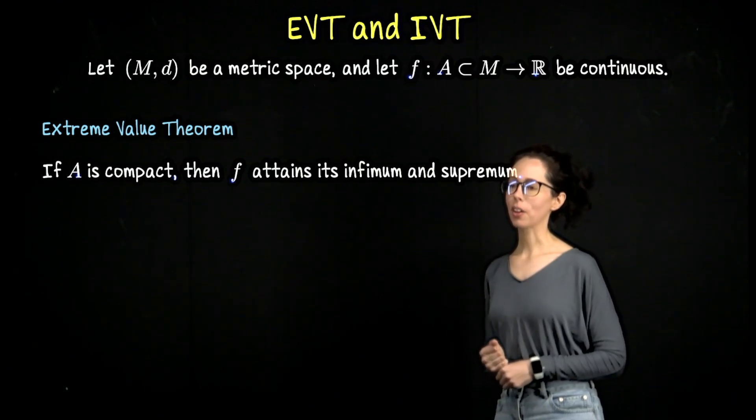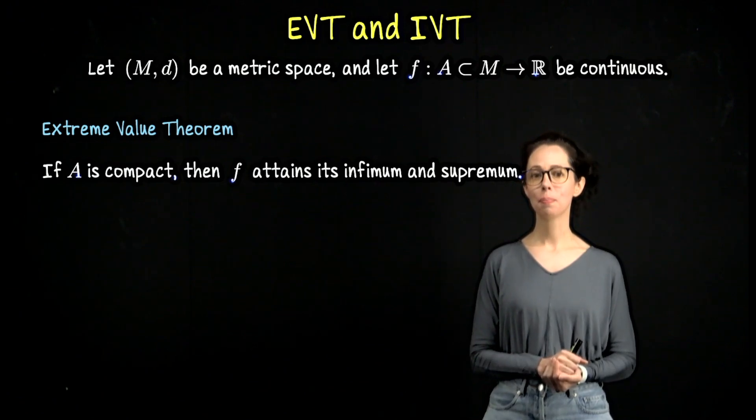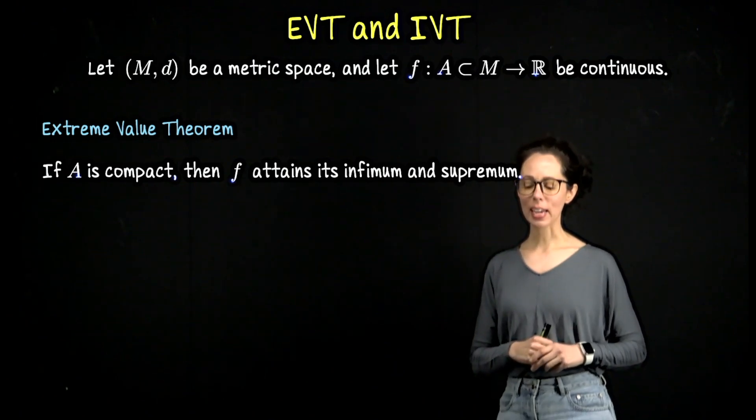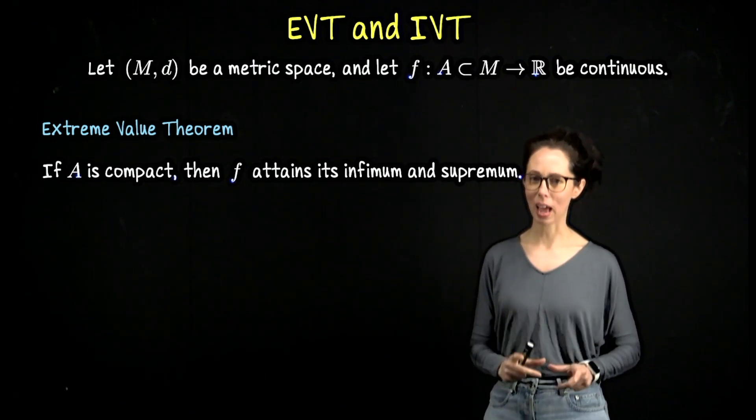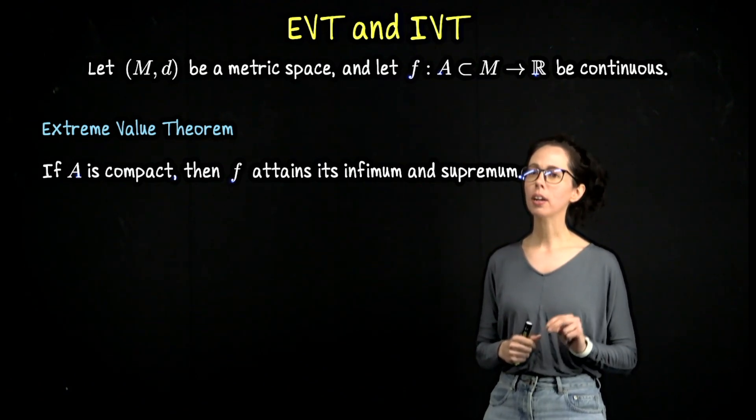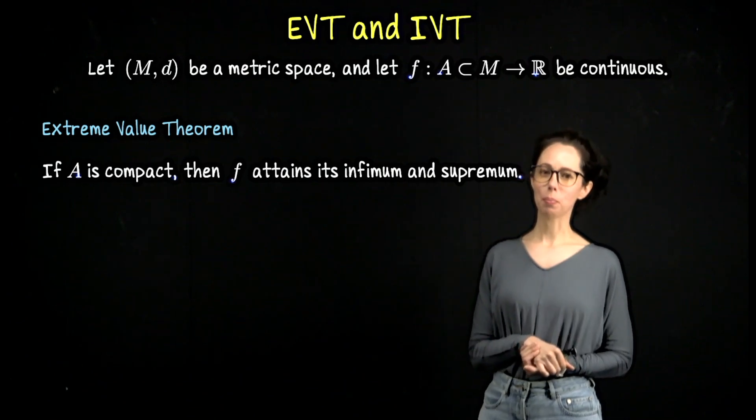One of these is called the Extreme Value Theorem, the other is the Intermediate Value Theorem. Take a moment to read the statement of the Extreme Value Theorem and think about what it implies about a continuous function on a compact set and where you might need this theorem.